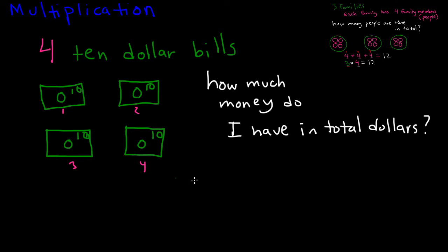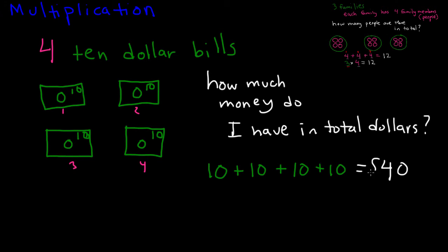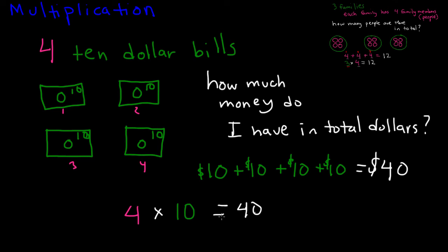So what I can do is add the ten dollar bills: ten plus ten plus ten plus ten. That equals forty dollars. Or I can write four times ten, which equals forty. Because I have one, two, three, four — four tens. These are all ten dollars, and that equals forty dollars.